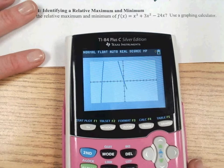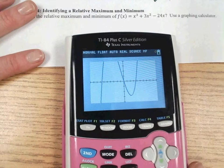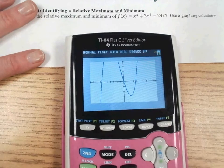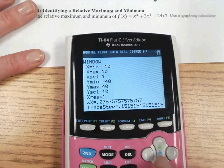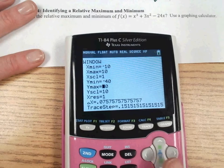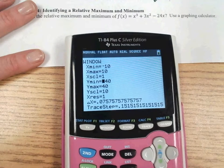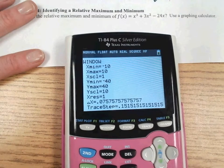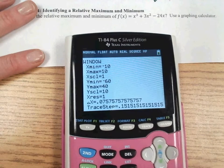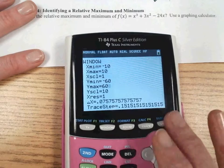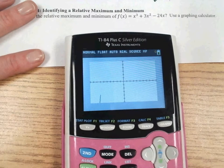My window is from negative 10 to 10. It looks like I'm not quite including the whole graph, so this is where you hit window. Actually, my y is negative 40 to 40 right now, but I'm going to go ahead and make that a little bit higher and lower. So I'm going to go from, let's go to negative 60 to positive 60. And we'll keep the scale going up by 10.